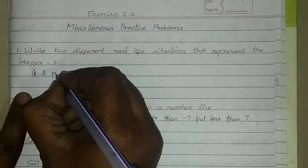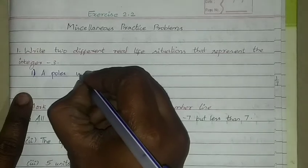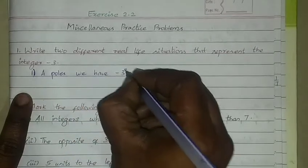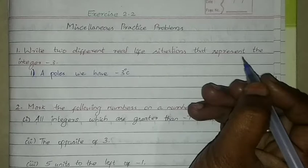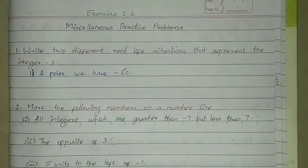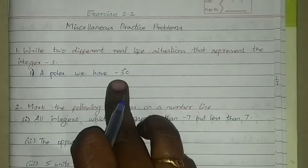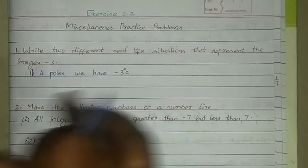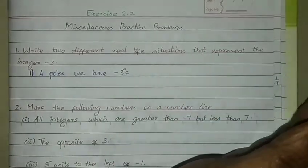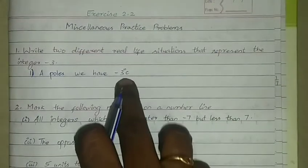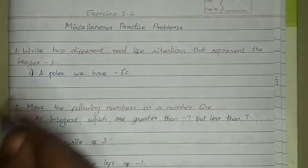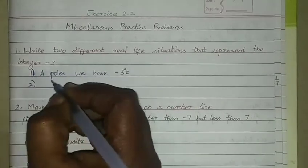At poles we have minus 3 degree Celsius. So at the poles, when it's very cold, there's minus temperature. Minus 3 degree Celsius represents minus 3 - it's very cold at the poles.